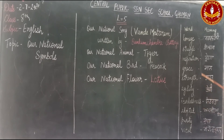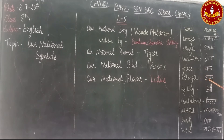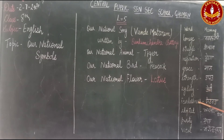Let us understand the meanings: Grace means shaan (dignity), strength means taqat (power), agility means tezi (swiftness), and fearlessness means nidarta (bravery). So the tiger is a symbol of dignity, power, swiftness, and bravery.